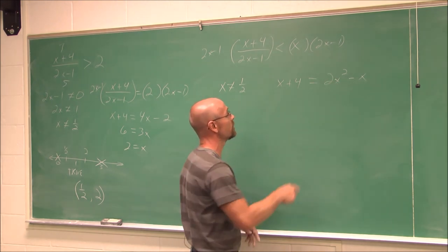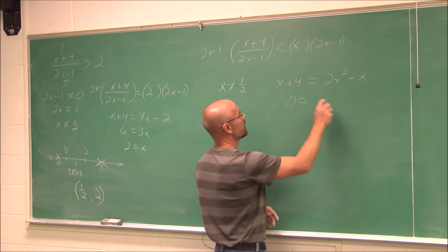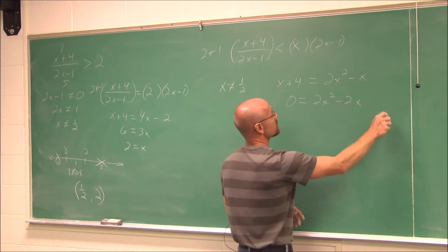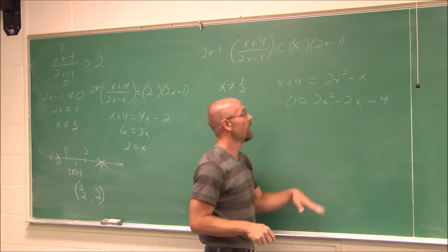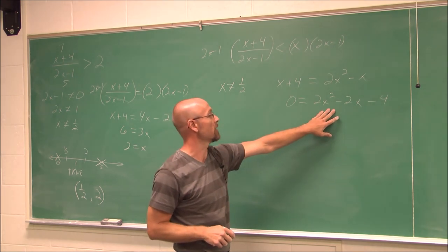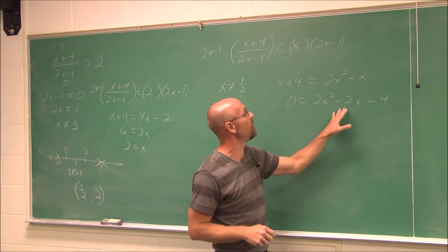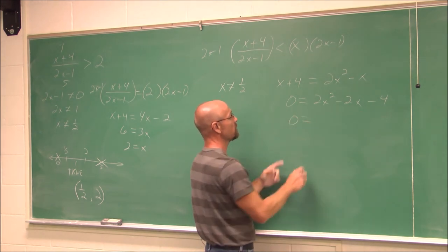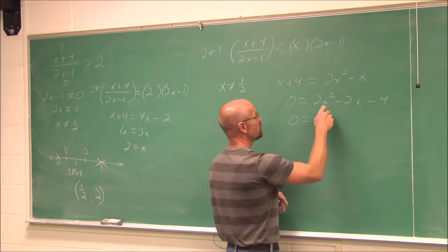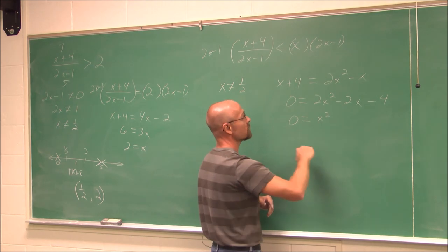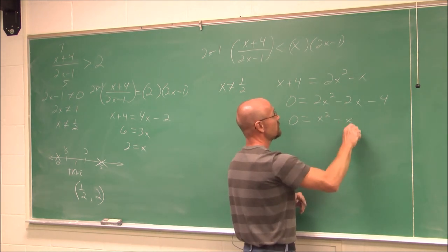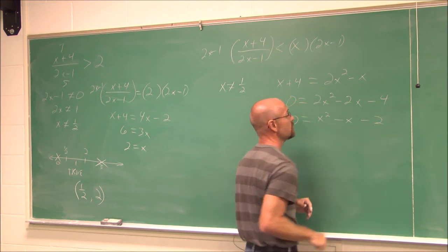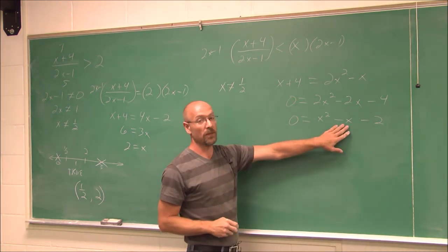So I have to solve this quadratic using quadratic methods. Always set these equal to 0. If I do that, I get 2x squared minus 2x minus 4. I can solve this using quadratic methods. I notice that all terms have a factor of 2, so I'm going to divide all terms by 2: I get x squared minus x minus 2.